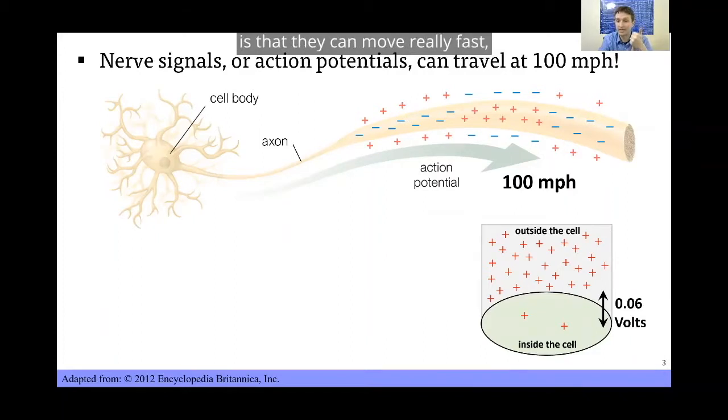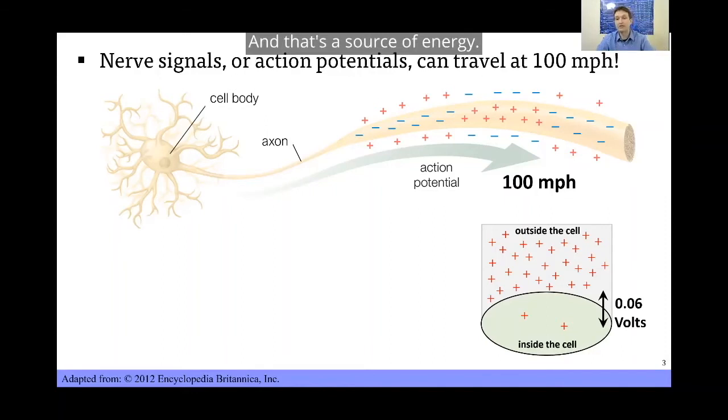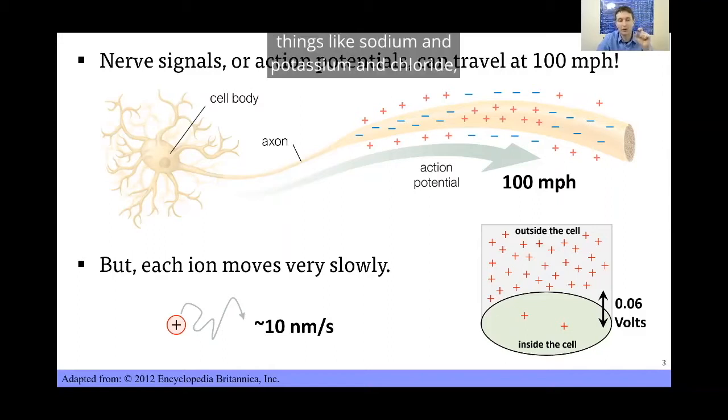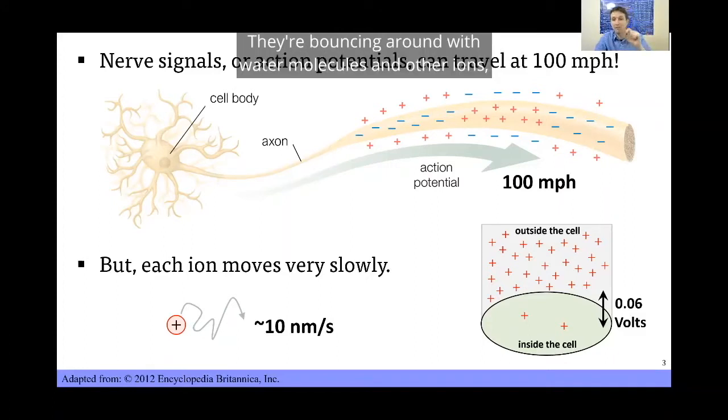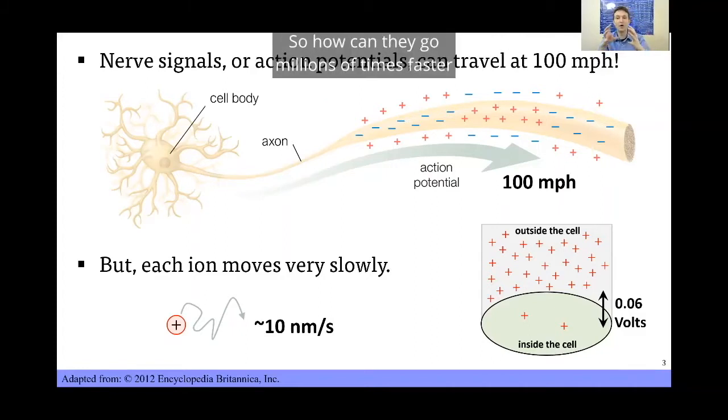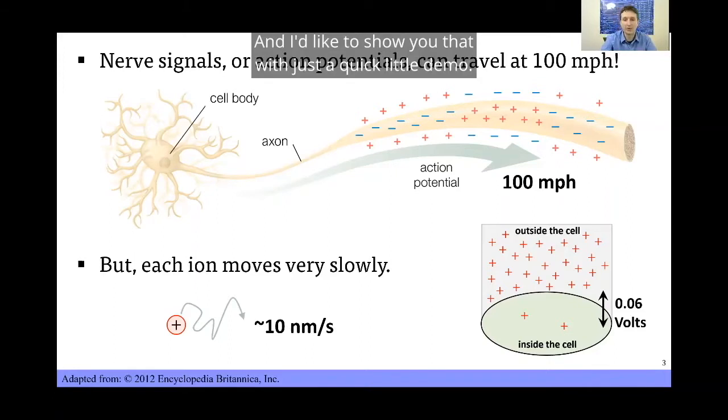What's cool about these action potentials is that they can move really fast, up to 100 miles per hour. Where does this energy come from? Well, we know already there's this potential difference because of how ions and charges are arranged inside a cell—more outside, more inside, depending on the type of ion. That's a source of energy. But there's still this question of why is it so fast? Because each little ion is absolutely tiny. These are just single atoms in the case of sodium, potassium, and chloride. And they're moving really, really slow, bouncing around with water molecules and other ions, just moving at something like 10 nanometers per second. So how can they go millions of times faster to have 100 mile per hour signals? I'd like to show you that with a quick demo.